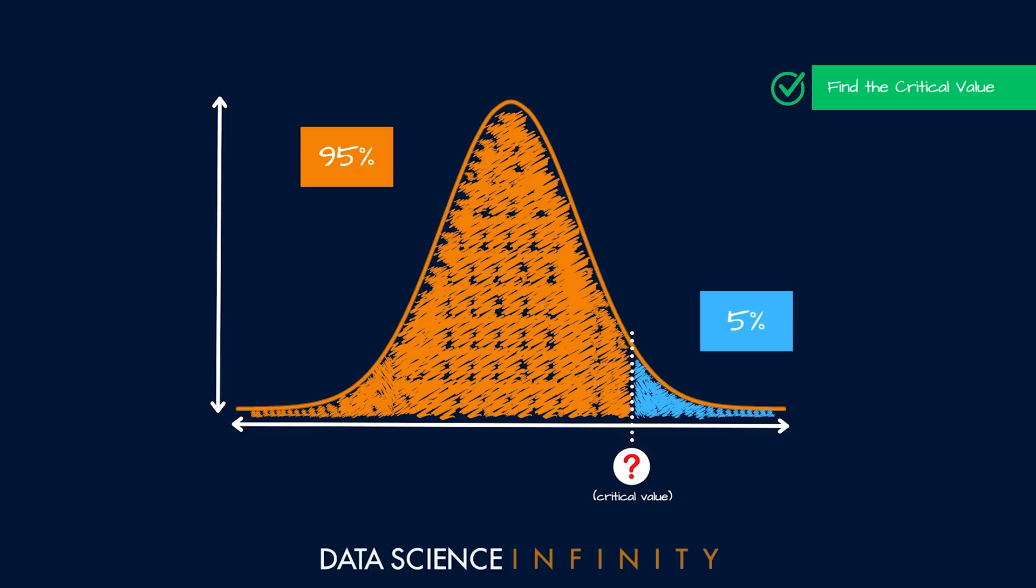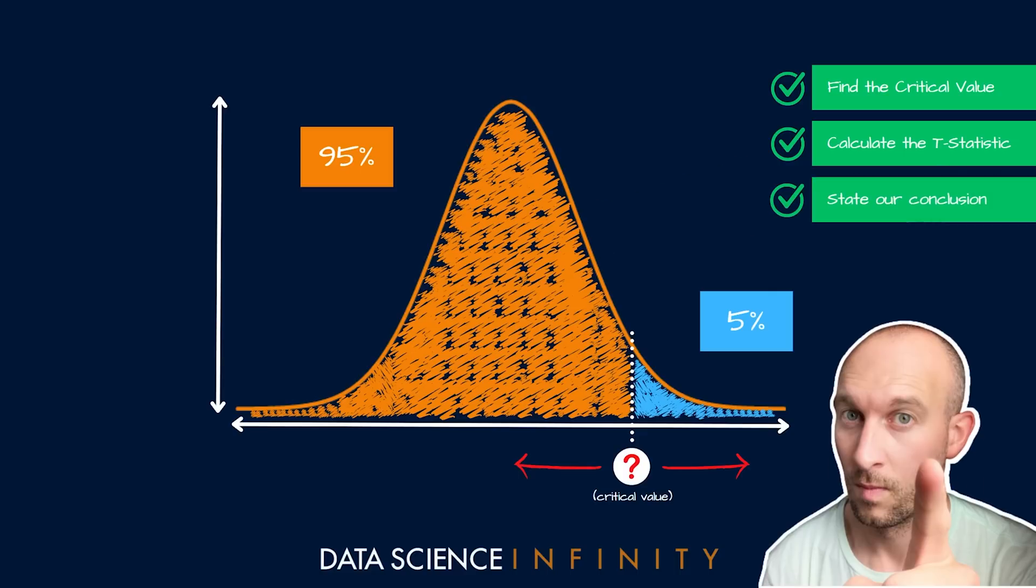Once we have that critical value, the next thing we need to do is calculate the t statistic for our test. Once we've done that, we'll look to see where it falls on the distribution relative to that critical value. With these two bits of information we can state our conclusion where we will either reject the null hypothesis or fail to reject the null hypothesis. When we get our result we will discuss exactly why we make this decision and what it means.